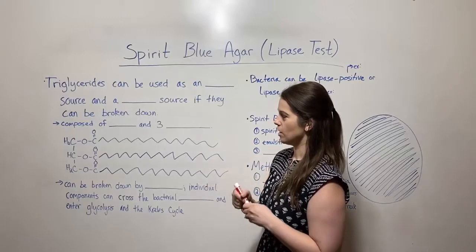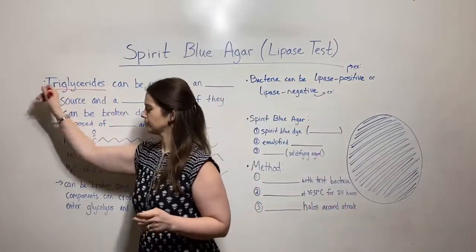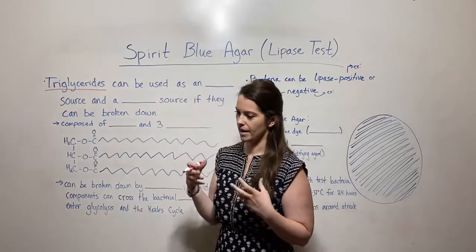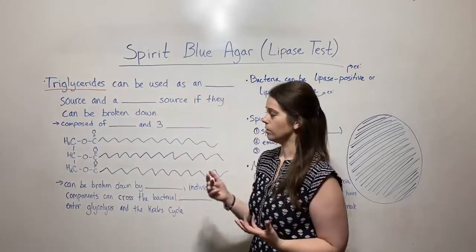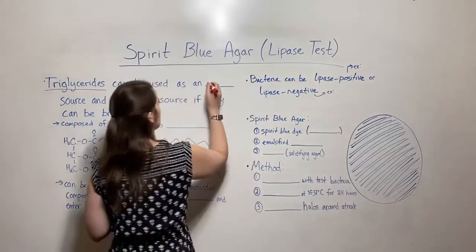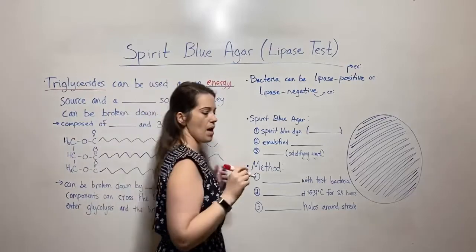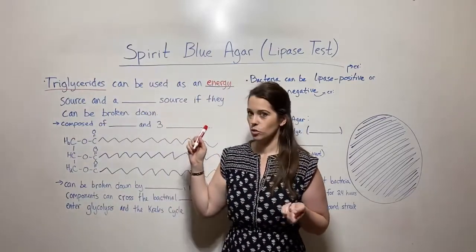But to understand this, first we need to talk a little bit about triglycerides. Triglycerides are a kind of lipid macromolecule that can be used as an energy source and also as a source of carbon.